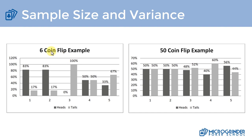In small sample sizes — equating to the short term, six different hands — for sample one it landed on heads 83 percent of the time and tails 17 percent. Sample two was the same. Sample three landed on tails 100 percent of the time. Sample four gave the expected 50/50 result. Sample five was heads 33 percent and tails 67 percent. The percentages are all over the place in small samples. But when we increase the sample size, look what happens with the 50-coin flip example.